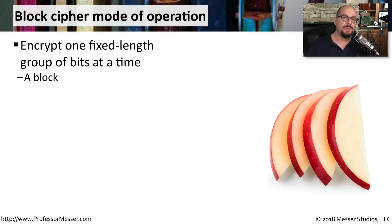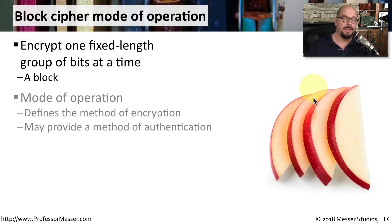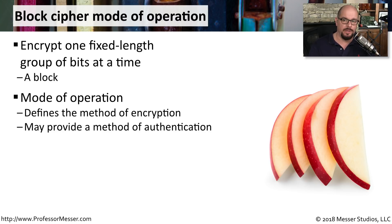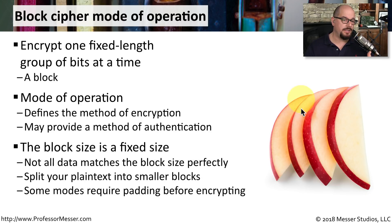One way of encrypting data is encrypting a block of information at a time. We take a single piece of information, cut it into fixed-size blocks, and perform encryption on a single block at a time. This encryption can be done in many different ways — we call this a mode of operation, and it defines how that encryption process will occur. Your data may not fall perfectly into a particular block size, so if the mode requires a fixed block size, it's common to pad the data to reach the exact size required for that encryption mode.